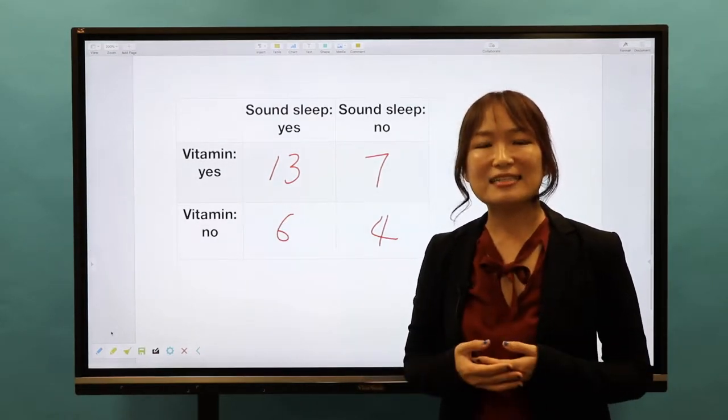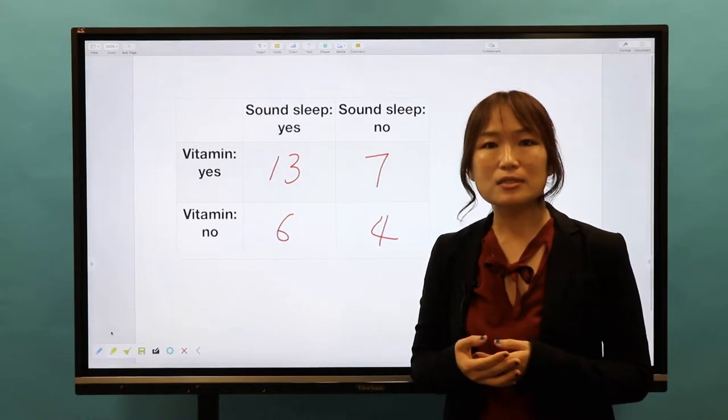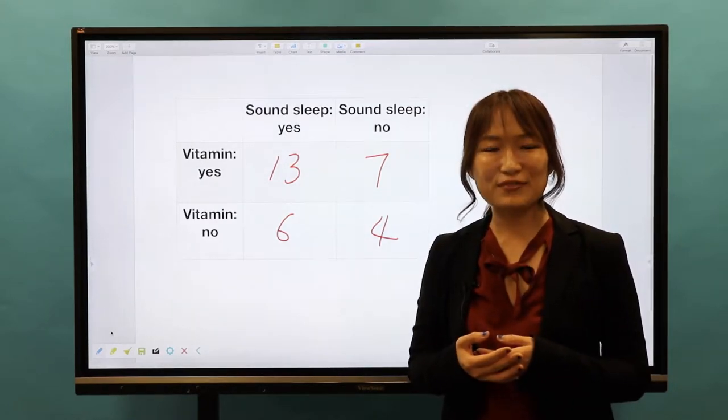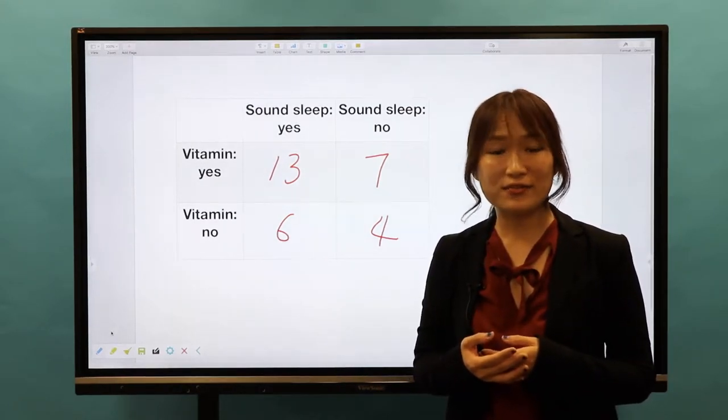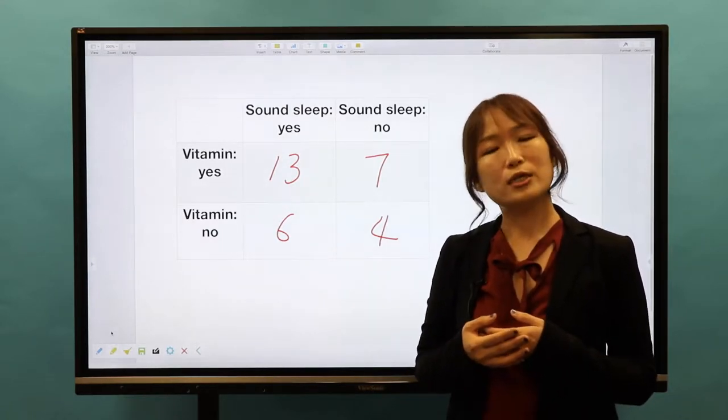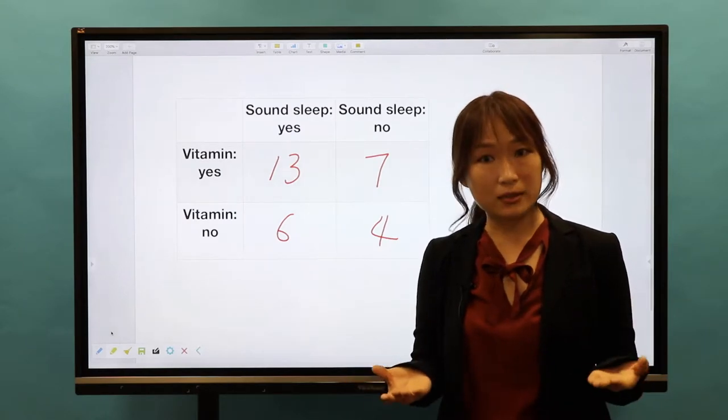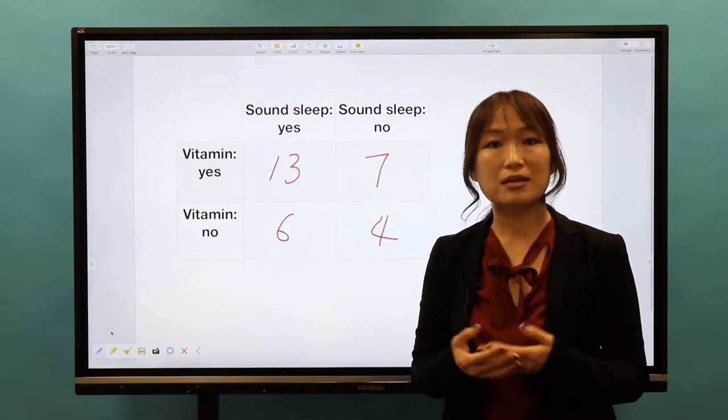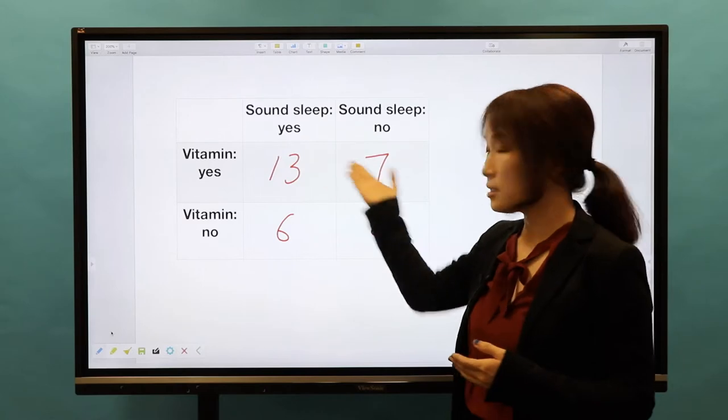When we analyze these kinds of categorical variables, we use a different approach from analyzing continuous variables. Now, before we get into the details of chi-square analysis, we need to understand some fundamental or important mathematical concepts behind a contingency table.